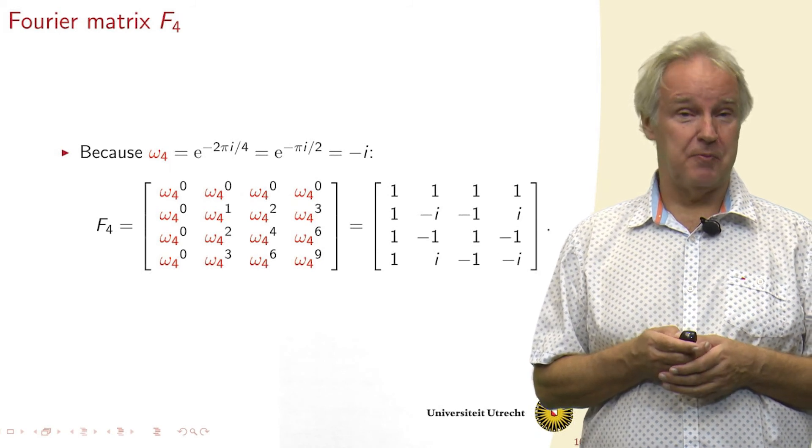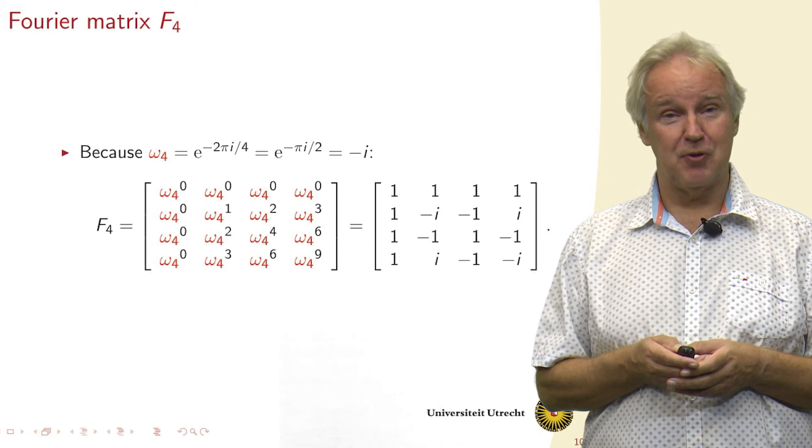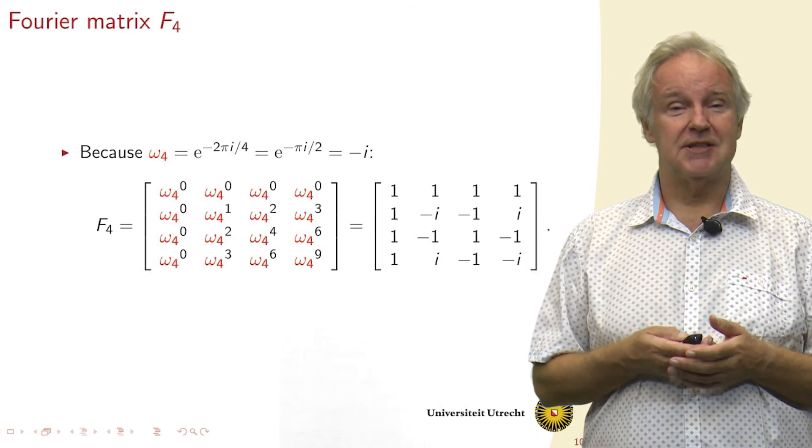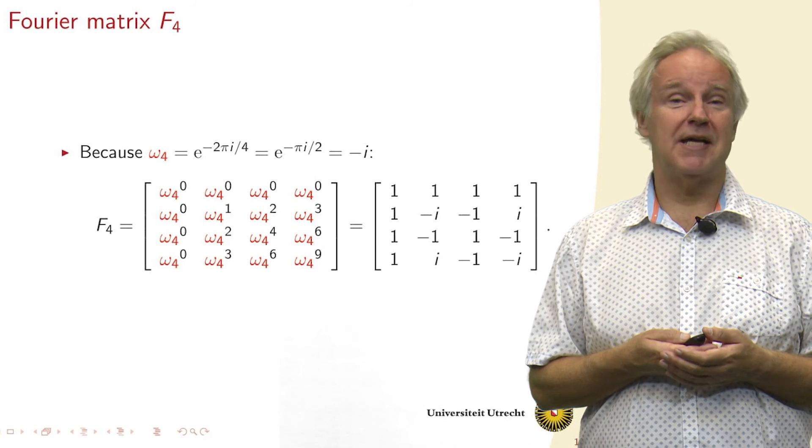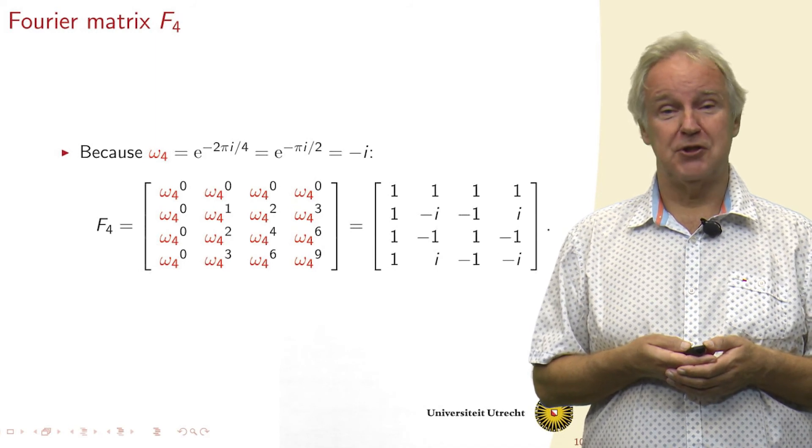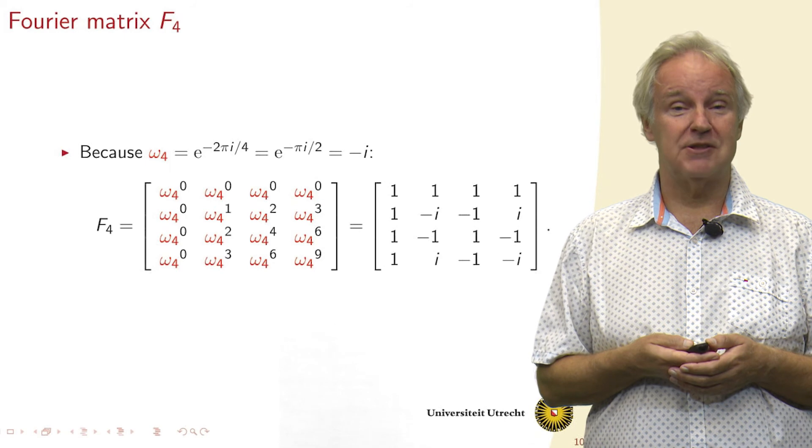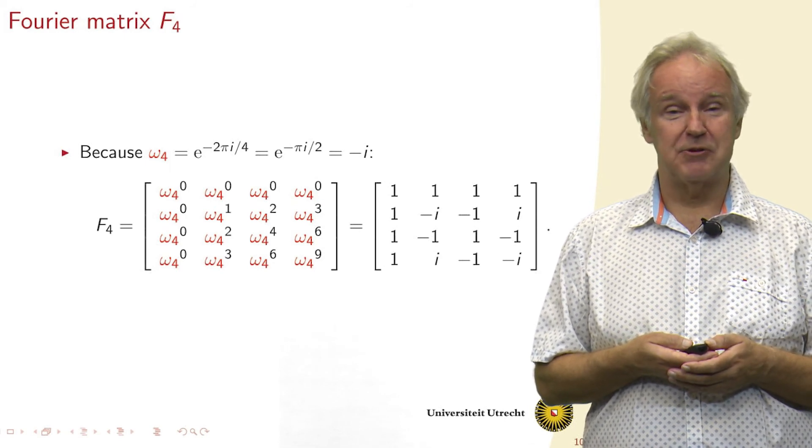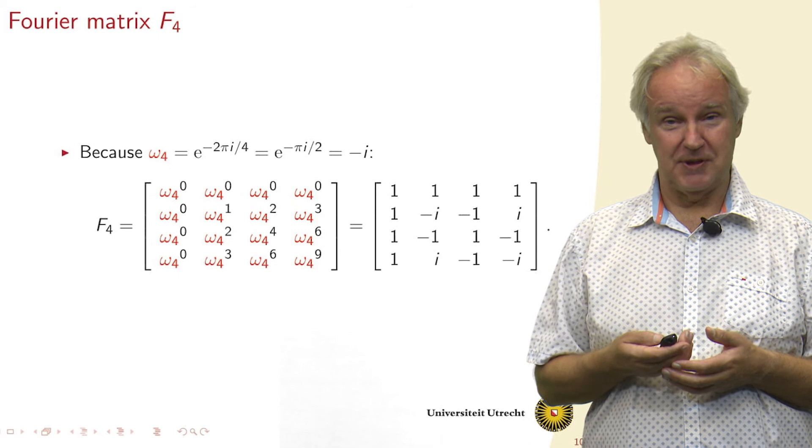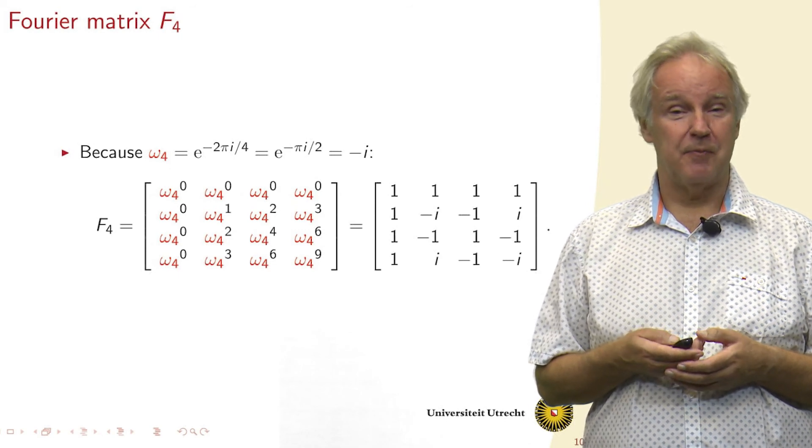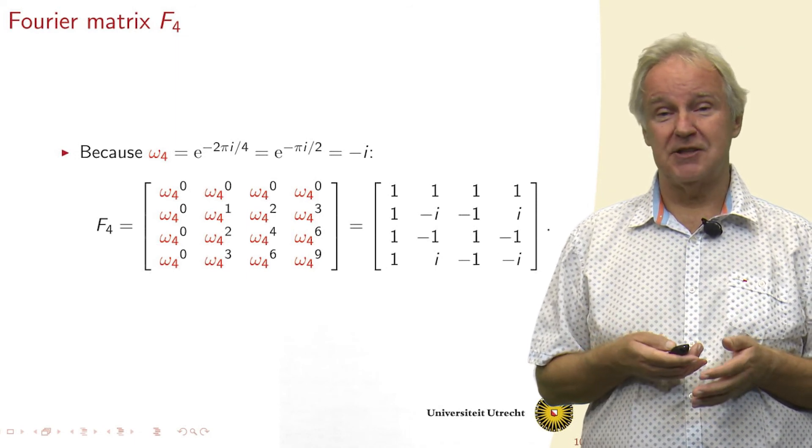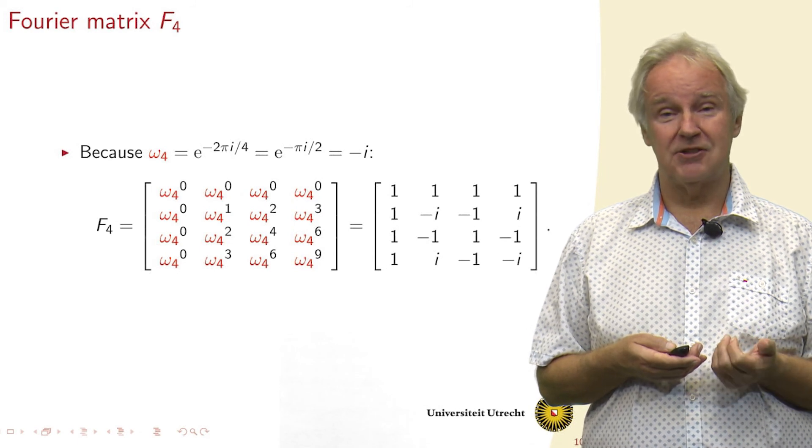If we now look at the case n equals 4, we see that this Fourier matrix has all these powers of omega 4. And since omega 4 is just minus the imaginary number i, we get, in the first row, we just get the zeroth power of this, which are all ones. But in the second row, we get the powers 0, 1, 2, 3. So you recognize minus i, minus i squared, which is minus 1. And then we get minus i to the power 3, which is i. So this is a matrix which just contains 1s minus 1s, i's minus i's.